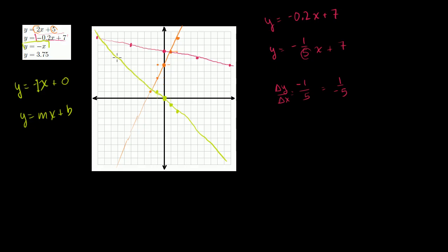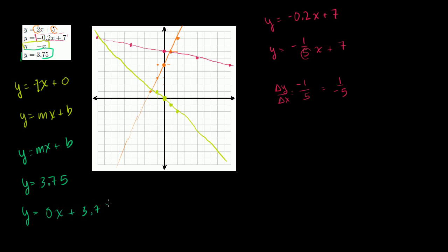Finally, y is equal to 3.75. Where is the x term? The slope is 0 — this can be rewritten as y equals 0x plus 3.75. No matter how much you change x, y does not change. The y-intercept is 3.75, which is 3 and 3 fourths. As you change x, y is always going to be 3.75, so it's just a horizontal line at y equals 3.75.